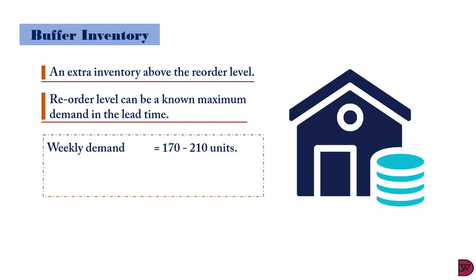So let's say a business's weekly demand is uncertain between 170 and 210 units, and their lead time is also between two to three weeks. The reorder level now will be 630 units, which is the maximum weekly demand of 210 multiplied by the maximum lead time of three.